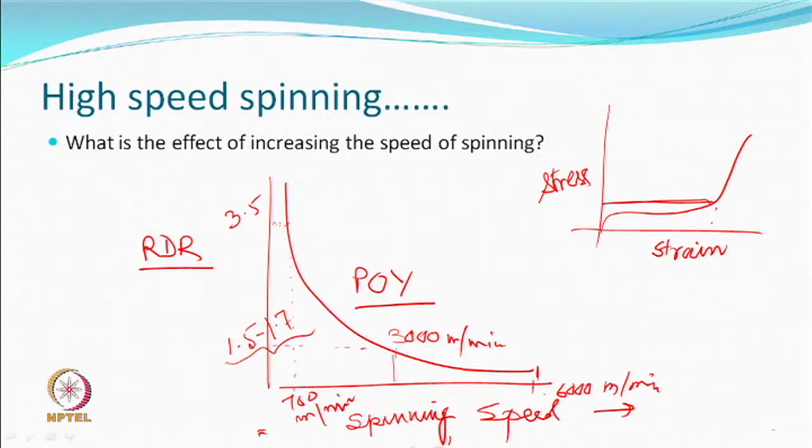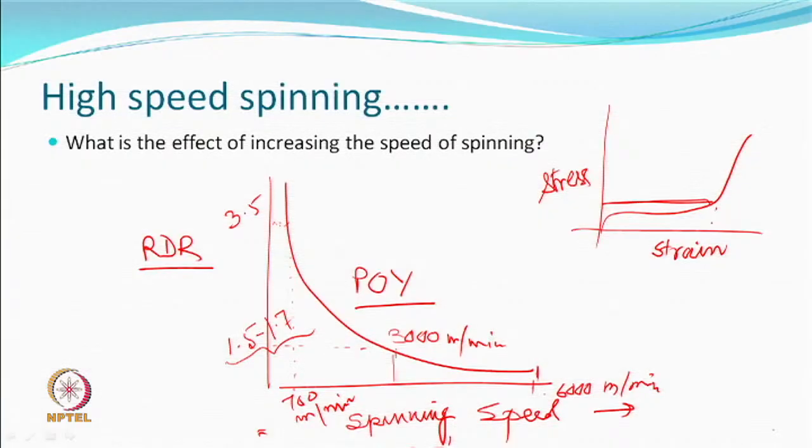The curve shows that as speed increases, the residual draw can go down to around 1.5 to 1.7. If you still increase speed to almost 6000 meters per minute, you can get an almost fully drawn yarn and need no further drawing. However, material produced at that speed is not considered as good as material which is drawn after spinning, because the development of morphology is slightly different. We were getting reduction in residual draw from an almost undrawn to a fully drawn condition.